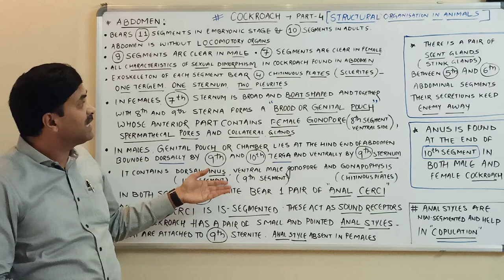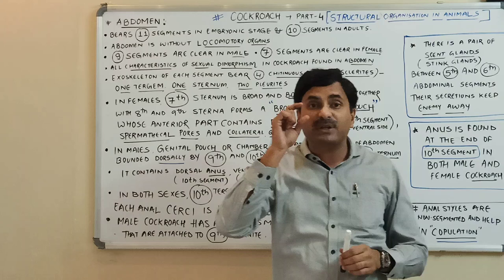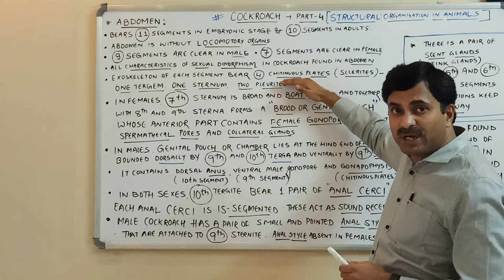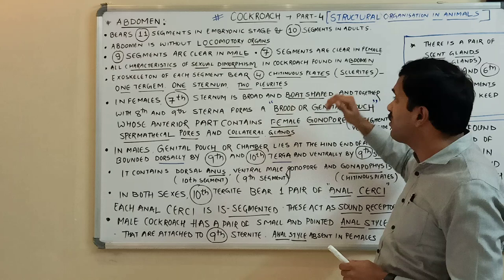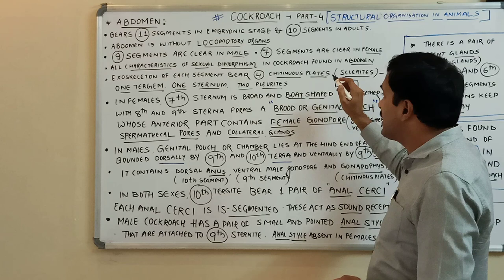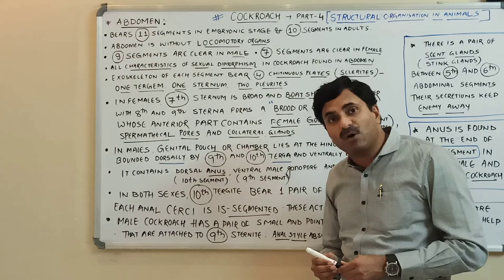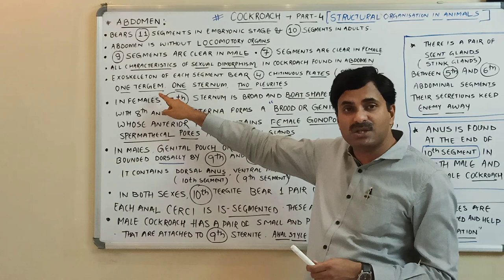The exoskeleton of each segment of the body consists of four chitinous plates called sclerites. If we take any segment, one is the tergum, one is the sternum, and two are the pleurites. So each segment of the abdomen also has four chitinous plates or sclerites: one tergum, one sternum, and two pleurites.